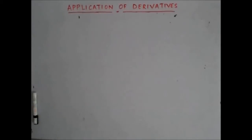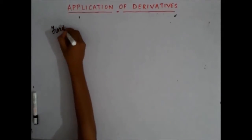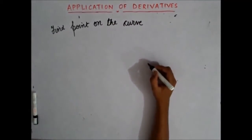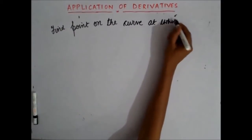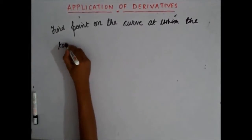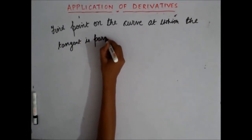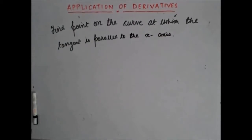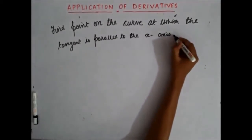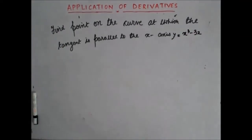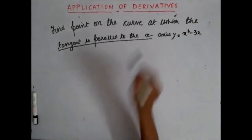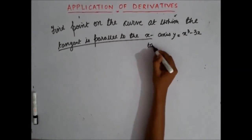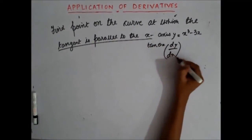The first question is: find the point on the curve y = x³ - 3x at which the tangent is parallel to the x-axis. Since the tangent is parallel to the x-axis, it implies that the slope of the tangent is 0 — that means tan θ, or dy/dx at that particular point P, is 0.